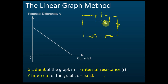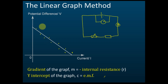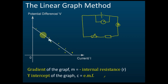We collect 10 sets of readings. After we get those 10 sets of readings, we plot the graph, and we get a straight line graph.